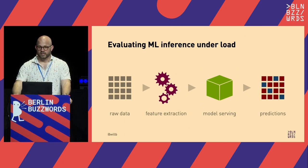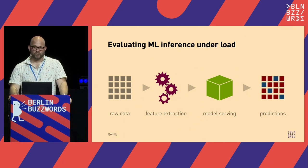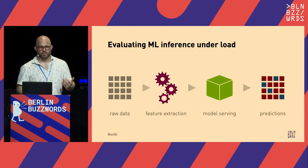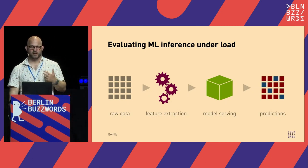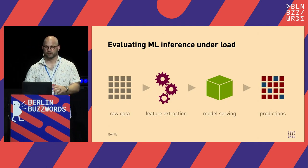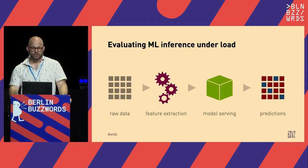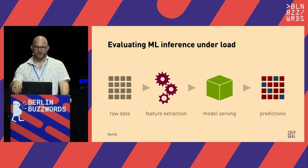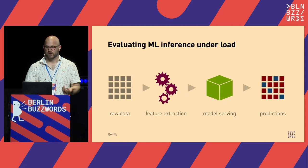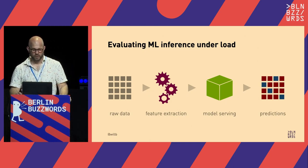Another example is production machine learning pipelines. In a production ML inference pipeline, you start with raw data from your program, an API gateway, or a database. You have a feature extraction pipeline that turns this into vectors, a model inference step where you evaluate the model against those feature vectors, and then you return a prediction.